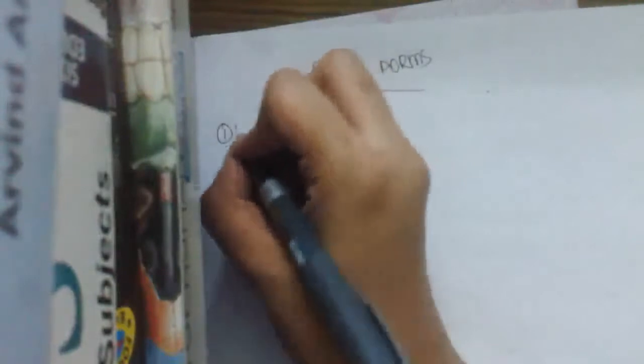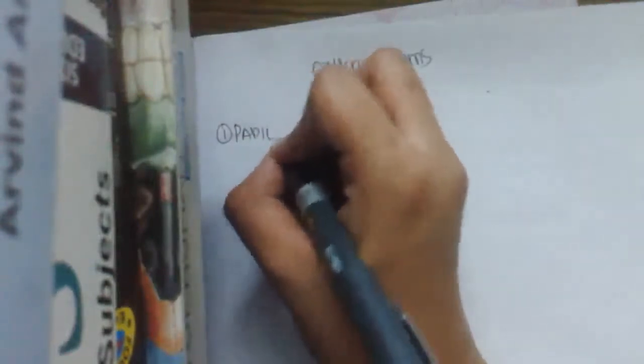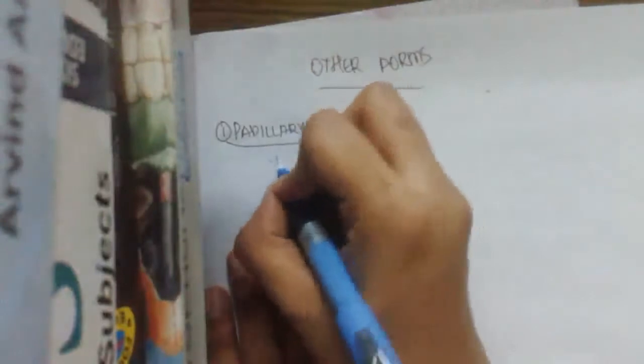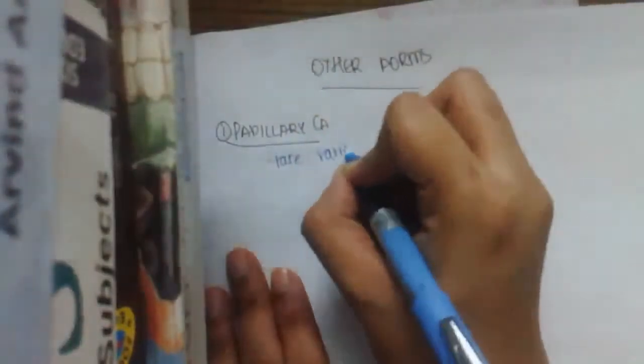So now we will deal with other forms of carcinoma. The first one includes papillary carcinoma. This is a rare variety of carcinoma which is infiltrating carcinoma. It is a most rare variety. One minute, let me take a pen.